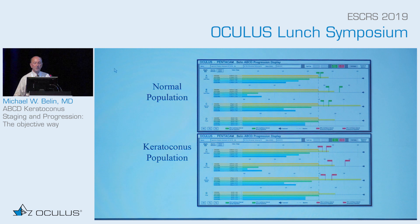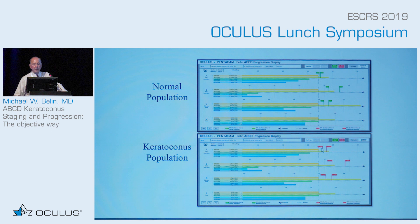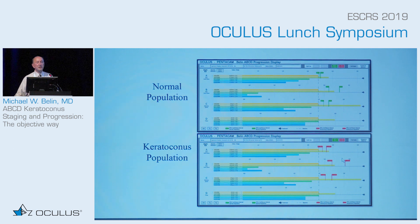Here you can see this same patient. On the upper map, we defaulted to show only the normal population; on the lower map, we show the keratoconic population. You'll notice on the keratoconic population, the gates are further out — because it's a noisier measurement, you need more change in the keratoconic population comparison to reach those statistical limits.